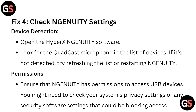Fix 4: Check NGUnity settings. Open the HyperX NGUnity software and look for the Quadcast microphone in the list of devices. If it's not detected, try refreshing the list or restarting NGUnity. Also ensure that NGUnity has permissions to access USB devices — check your system's privacy settings or any security software that could be blocking access.